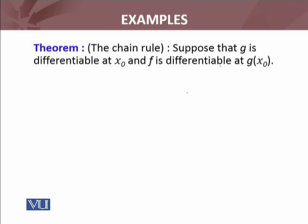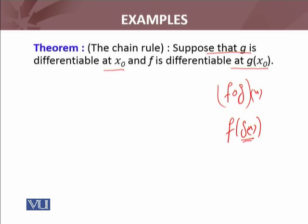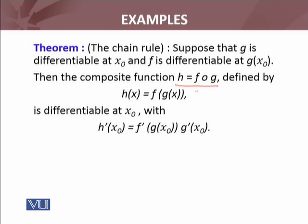The chain rule: suppose that g is differentiable at x₀ and f is differentiable at g(x₀). Then the composite function h = f ∘ g, defined by h(x) = f(g(x)), is differentiable at x₀, and its derivative is given by the formula: f′ evaluated at g(x₀), multiplied by g′ evaluated at x₀.